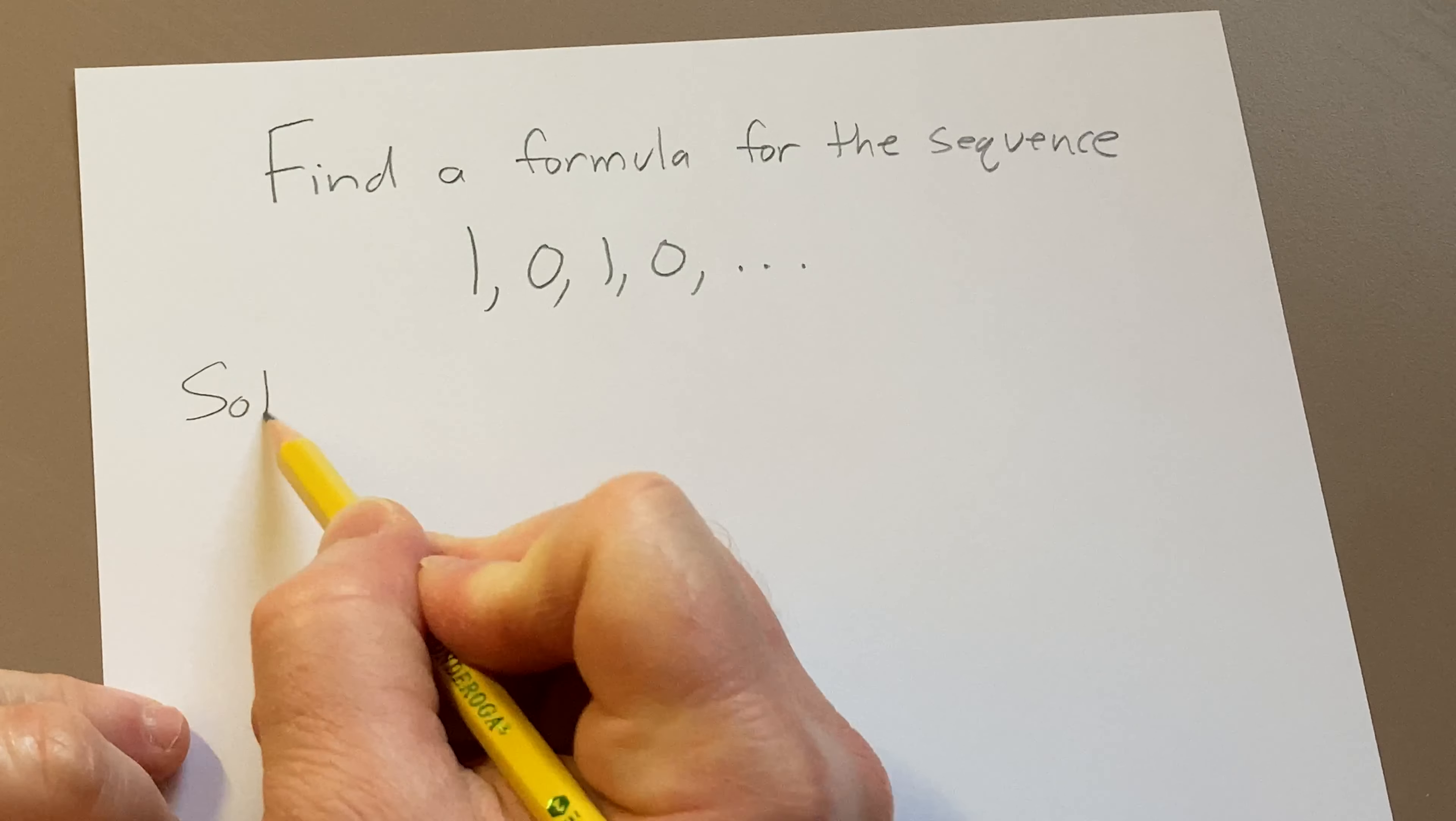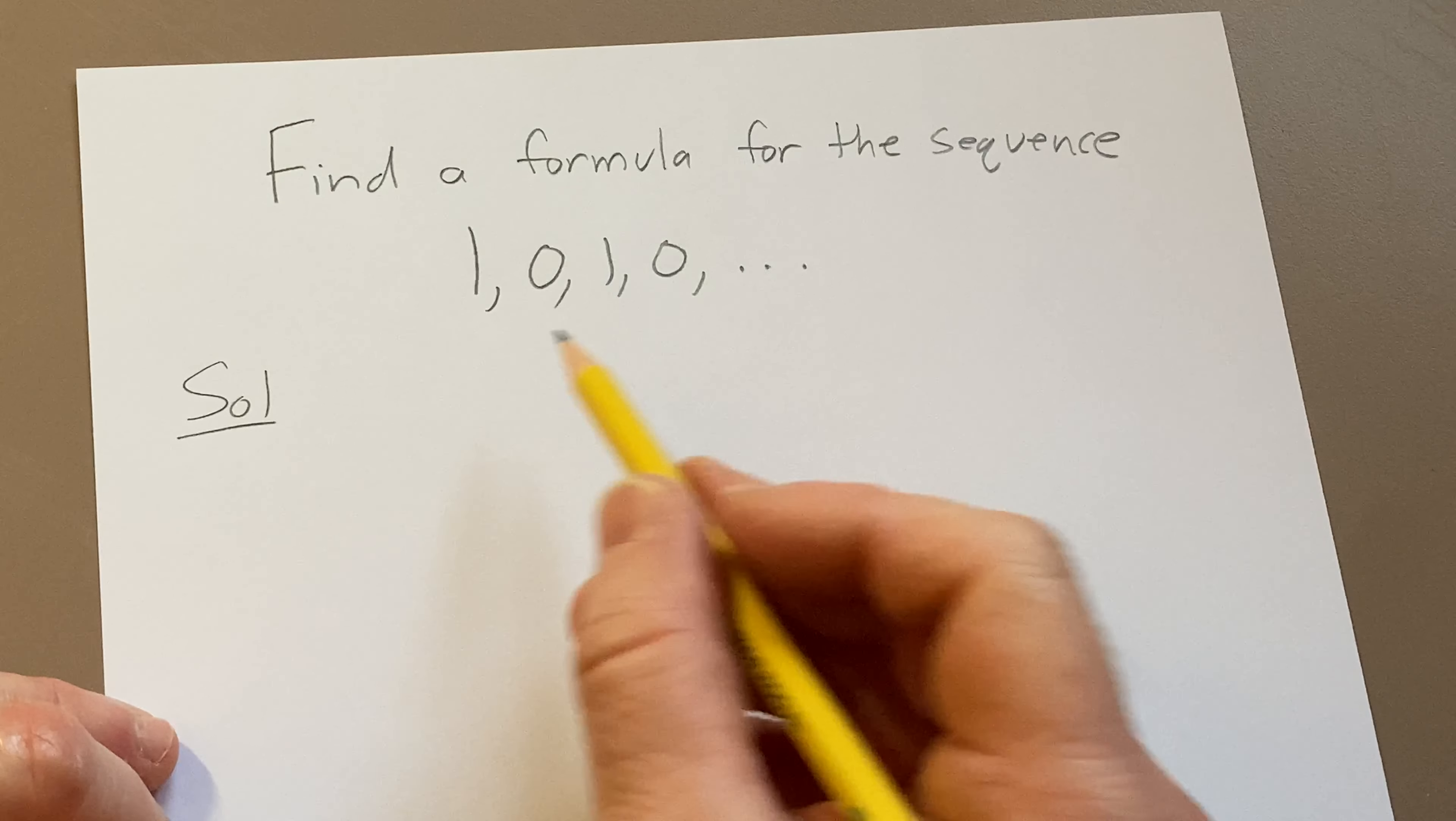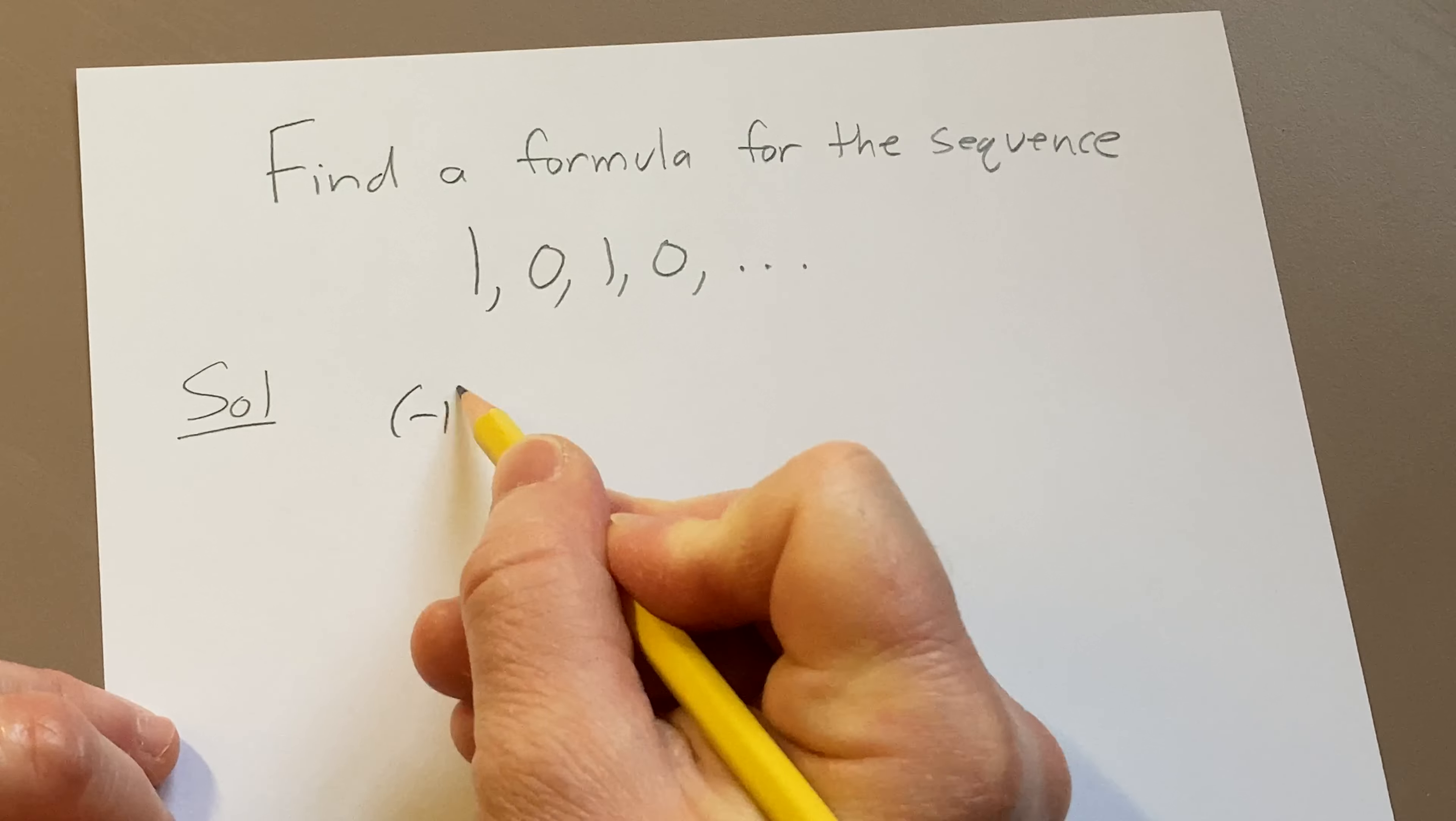Solution. So let's start by looking at another sequence that might be familiar that alternates like this, and that sequence is (-1)^n.